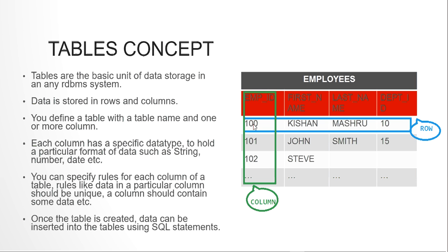You can have multiple rows. For example, the first row says employee ID is 100, first name is Kishan, last name is Mushroom, and department ID is 10. Where a row and a column intersect is known as a cell — so that value '100' in department ID is called a cell.